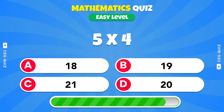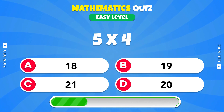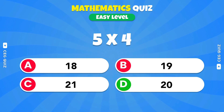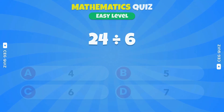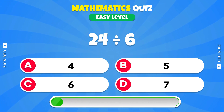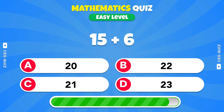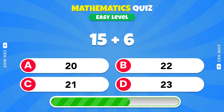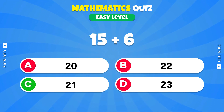What is the result of 5 times 4? That's 20. What is 24 divided by 6? The answer is 4. What is the total of 15 and 6? It's 21.